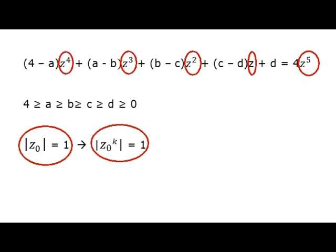Let's view the terms of this equation after this substitution as complex numbers, so that we have five complex numbers on the left side and one complex number on the right side. The magnitude of z₀ to the fifth power is 1, so the right side has magnitude 4. The sum of the magnitudes of all five terms on the left side is (4-a) + (a-b) + (b-c) + (c-d) + d, which equals 4, since all letters a, b, c, and d cancel. This is a big discovery.